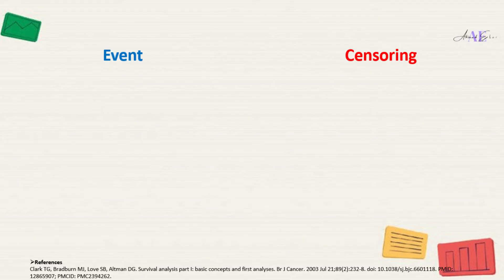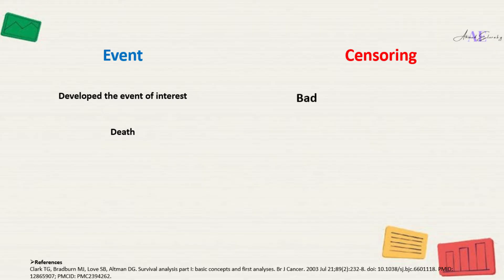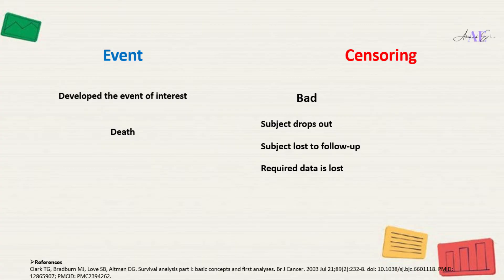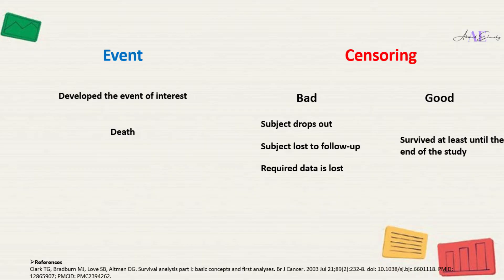In this example, event occurrence means subject death. On the other hand, censoring means the total survival time for that subject cannot be accurately determined. This can happen when something negative for the study occurs, such as the subject dropping out, lost to follow-up, or required data is not available. Or conversely, something good happens, such as the study ends before the subject had the event of interest occur, which means they survived at least until the end of the study, but there is no knowledge of what happened thereafter. Thus, censoring can occur within the study or terminally at the end.